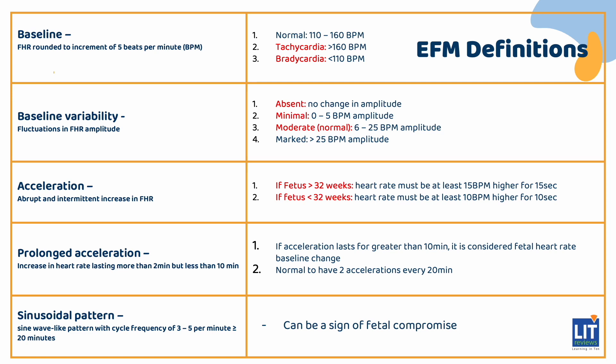Next, we look at baseline variability — fluctuations present in the fetal heart rate amplitude which are not accelerations or decelerations. The amplitude is measured from peak to trough in any one-minute segment and is usually irregular in frequency. Persistent absent or minimal variability is a sign of fetal compromise. Absent variability shows no change in amplitude; minimal variability is 0 to 5 beats per minute. Moderate variability is 6 to 25 beats per minute and is the normal baseline variability. Marked variability is greater than 25 beats per minute.